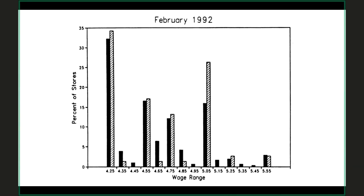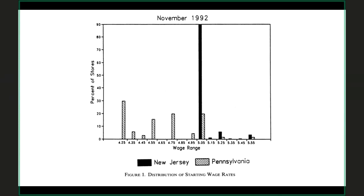Looking at the wage distribution — the fraction of stores paying exactly the old minimum wage of $4.25 and so on — New Jersey and Pennsylvania look pretty similar before the increase. The dashed line is Pennsylvania and the solid line is New Jersey. The main difference is that more Pennsylvania stores were already paying high wages of $5.05 an hour before the New Jersey minimum wage increase. After the increase, New Jersey stores shifted their compensation substantially — essentially every New Jersey store shifted to paying exactly the new minimum wage — while Pennsylvania stores didn't change their compensation very much.